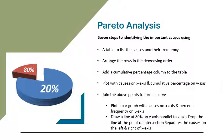Step seven: draw a line at 80% on the y-axis parallel to the x-axis, then drop the line at the point of intersection with the curve on the x-axis. This point on the x-axis separates the important causes on the left and less important causes on the right.